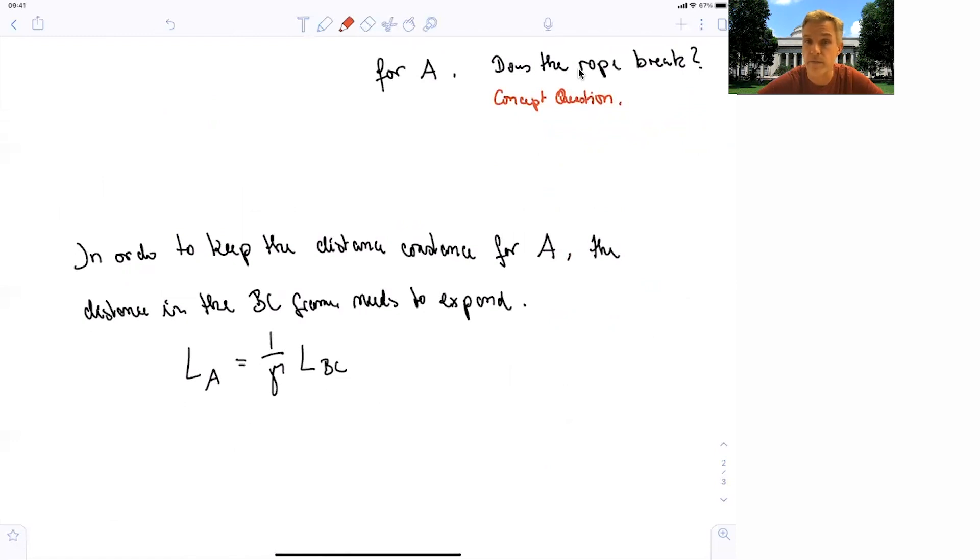So LA, so the distance as observed by Alice, by our reference frame A, is equal to 1 over gamma, the distance between the two spacecraft. And for this to stay, for LA to stay constant while there's acceleration going on, LBC needs to increase. That's why the rope will break.